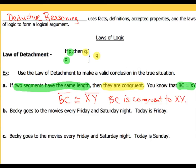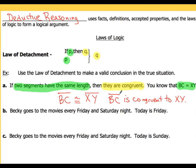Small detail: if I use symbols, notice how BC has got the little bar over it, and so does XY. But if I use the words and say 'BC is congruent to XY,' I want to make sure I put the bars over that — just like that. So segment BC is congruent to segment XY. That's going to be my conclusion.